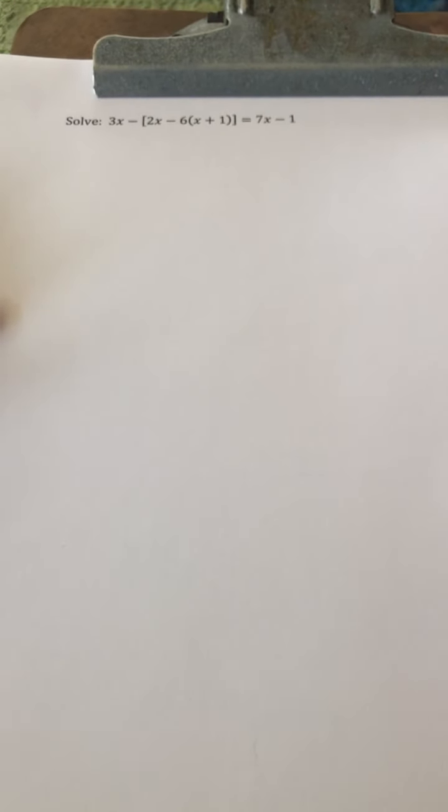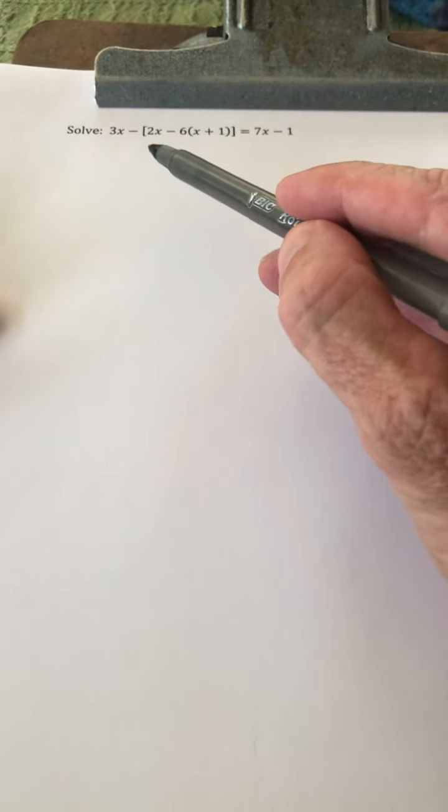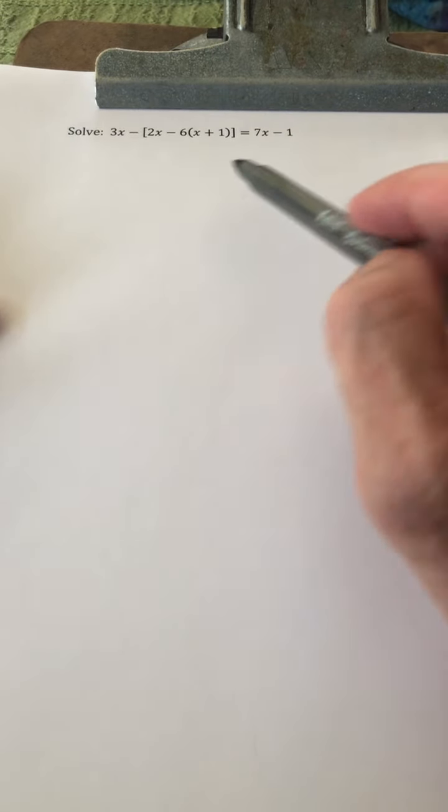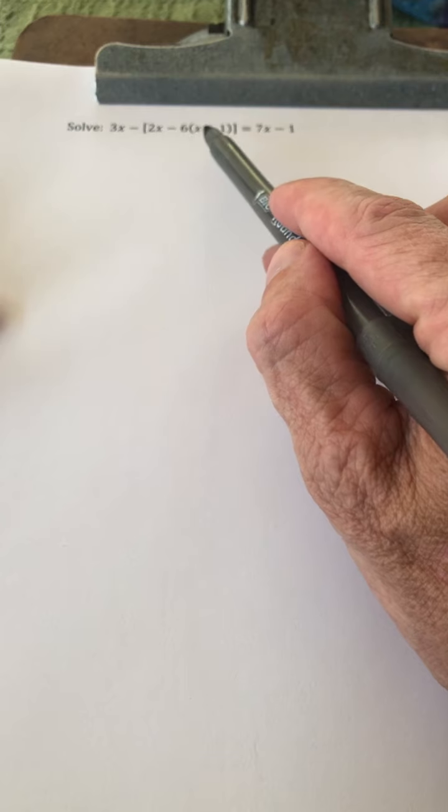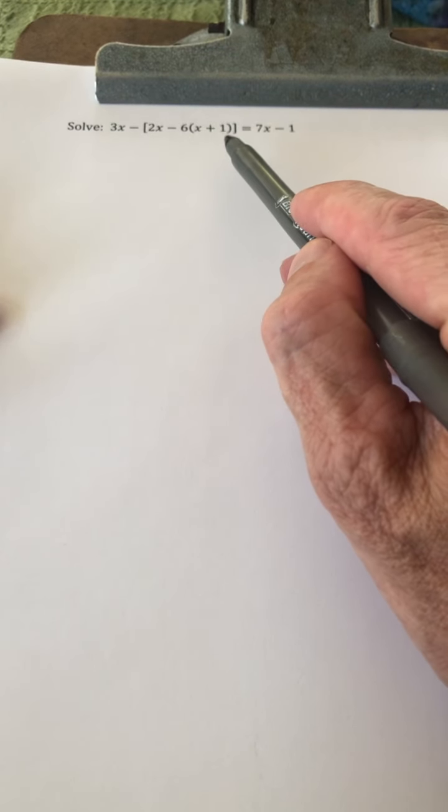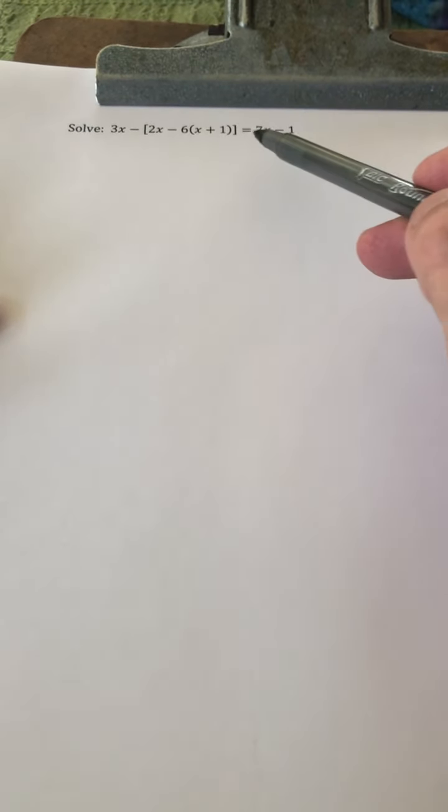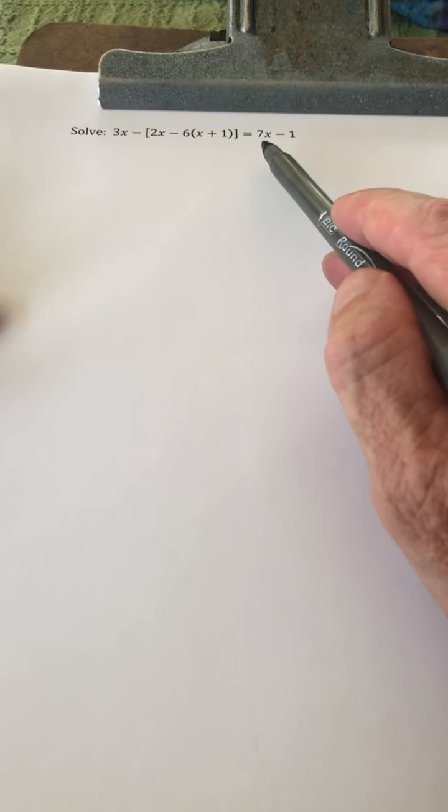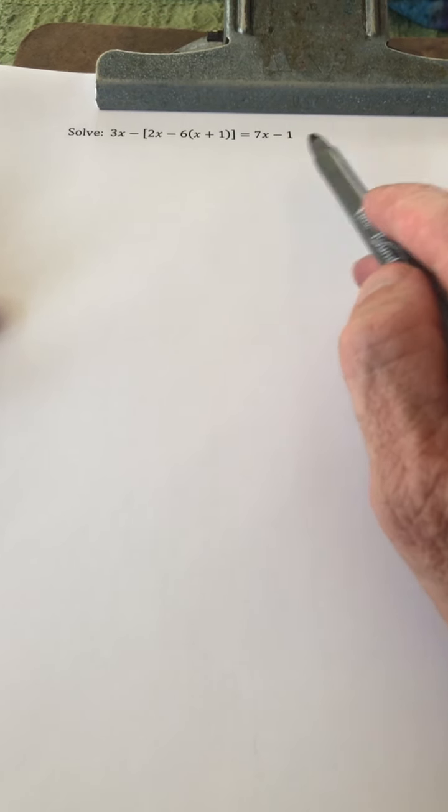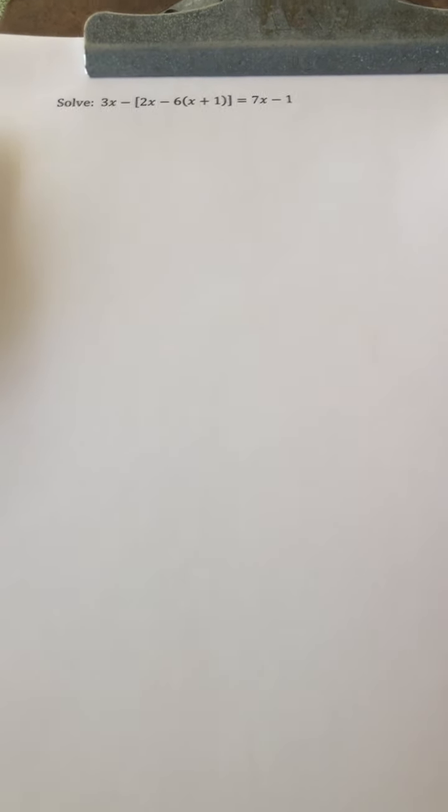We want to solve the equation 3x minus the quantity 2x minus 6 times the quantity x plus 1, close parenthesis, close bracket, equals 7x minus 1. So notice that,